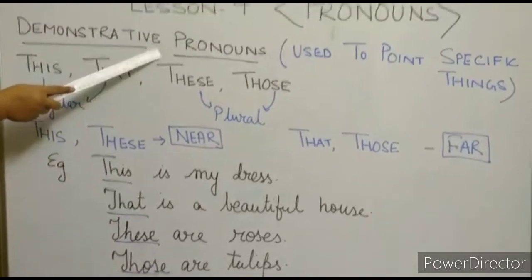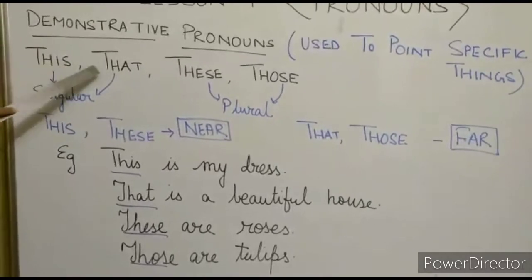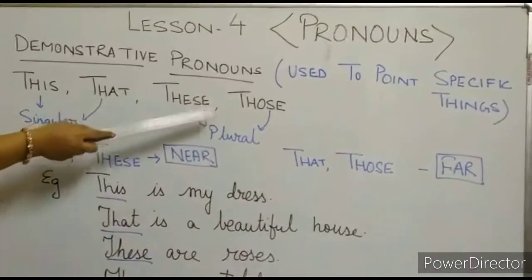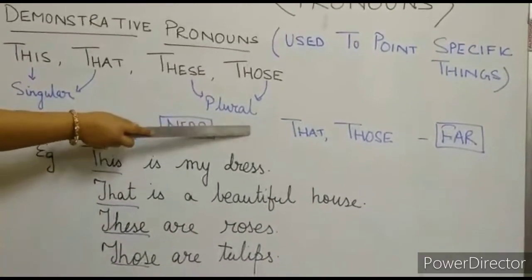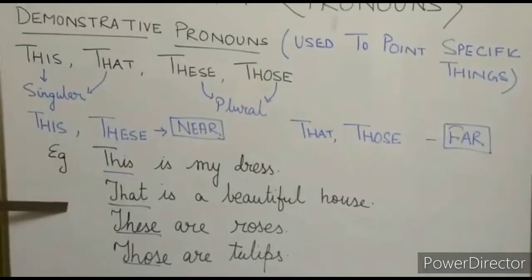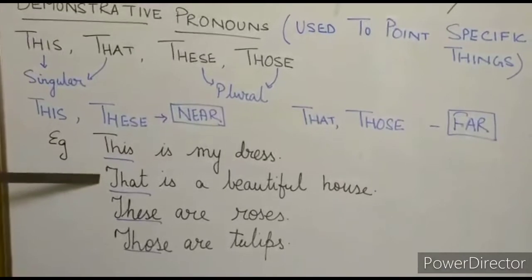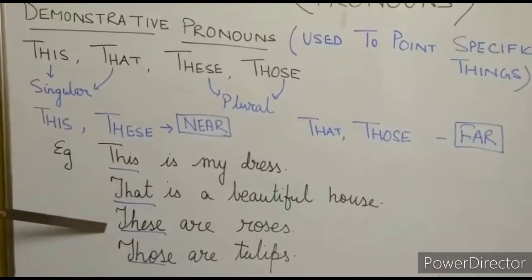To recap: demonstrative pronouns are used to point to specific things. There are four: this, that, these, and those. 'This' and 'that' are singular; 'these' and 'those' are plural. 'This' and 'these' refer to things near us; 'that' and 'those' refer to things far away.